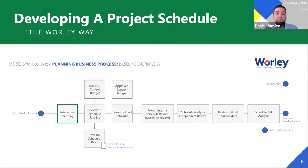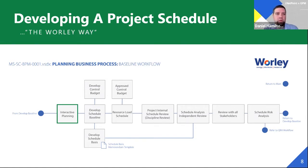Interactive planning was an additional step created during our harmonization efforts with Jacobs to Worley Parsons. When we became Worley as one company, we refined this business process map for our organization. Both companies did utilize interactive planning sessions, but it was never a step in the business process map. This was a new step we added in our harmonization effort of the two companies.